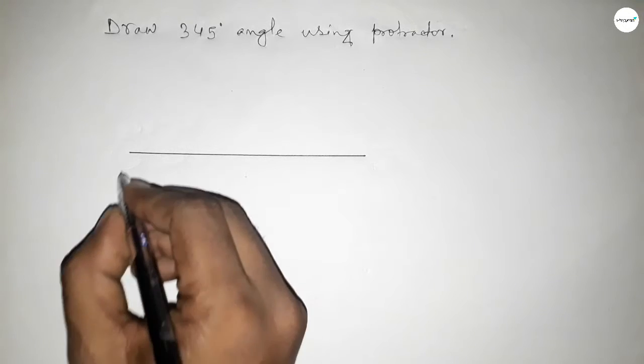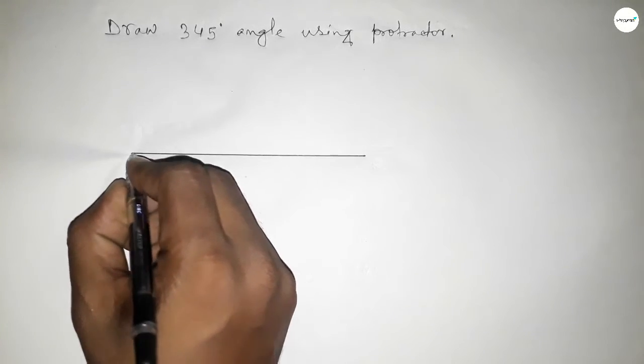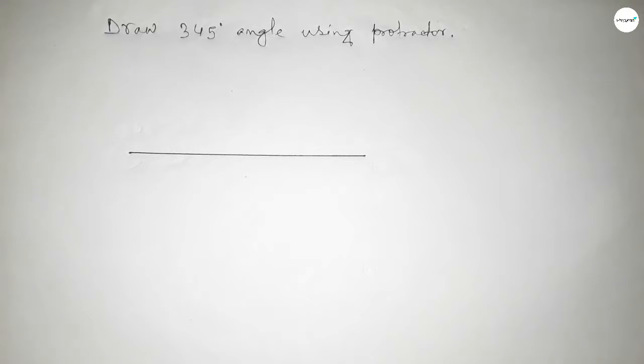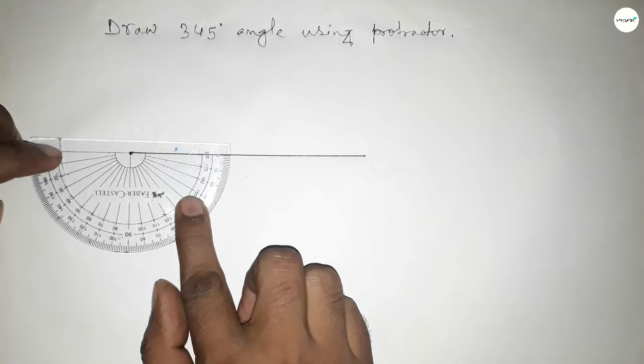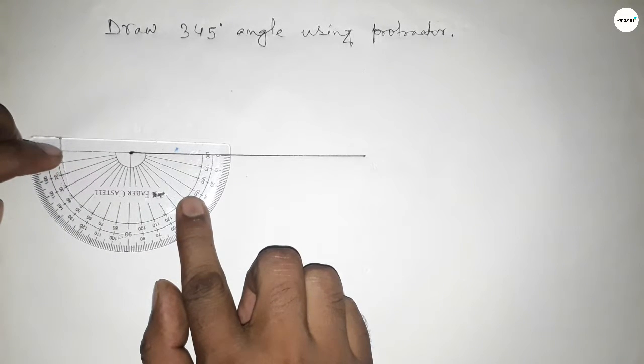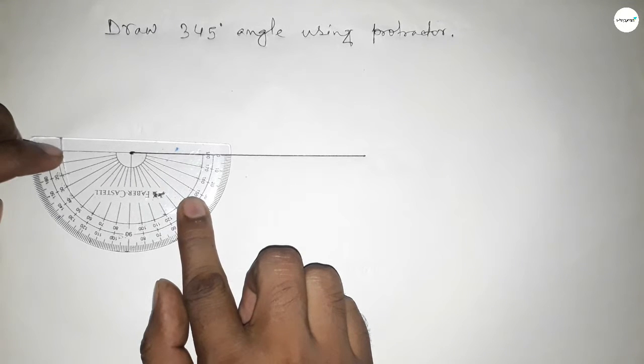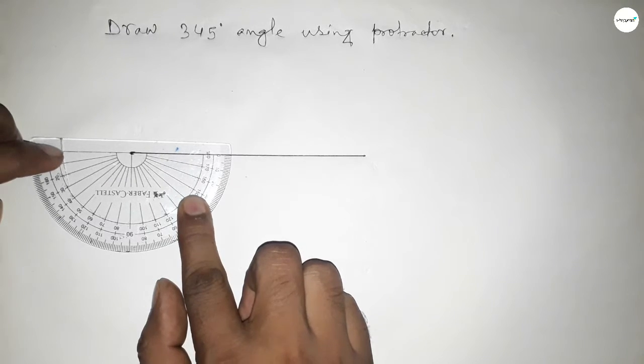First drawing a straight line. Next, pointing out here to draw 345 degree angle by using protractor. So now putting the protractor on the line perfectly, then counting the angle.